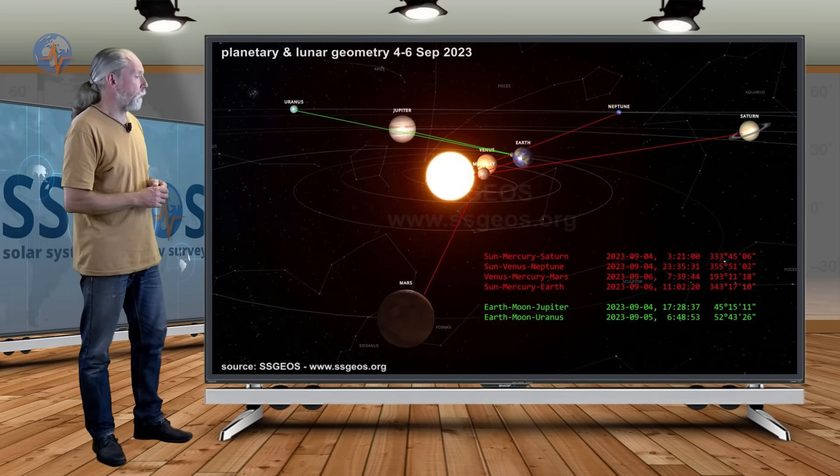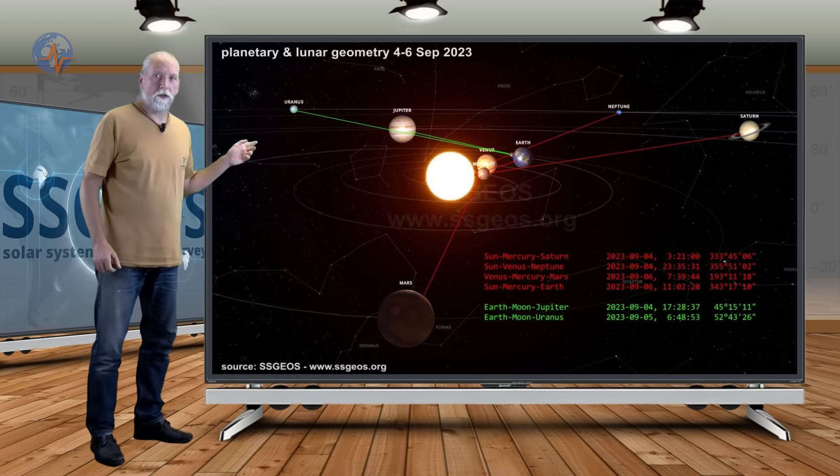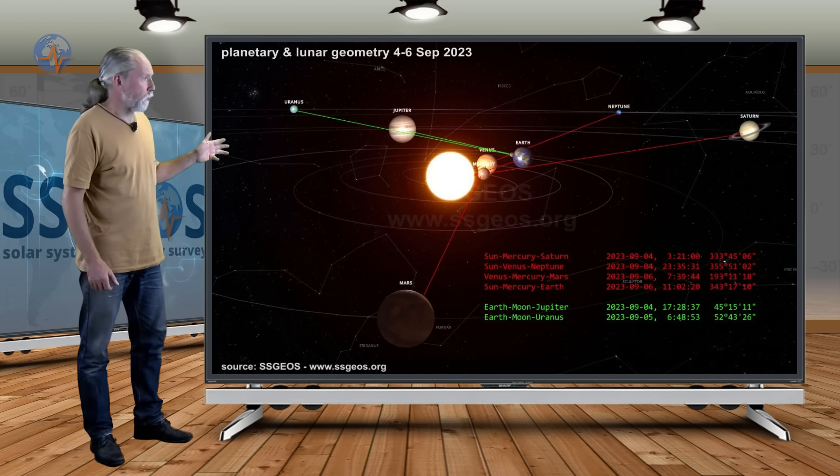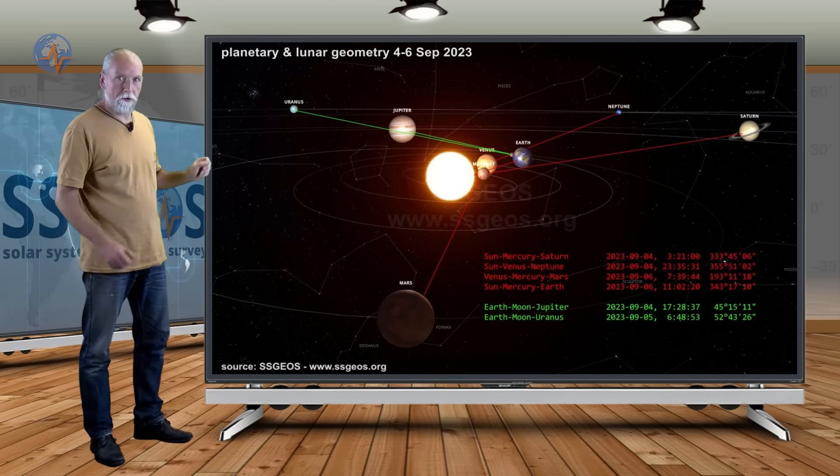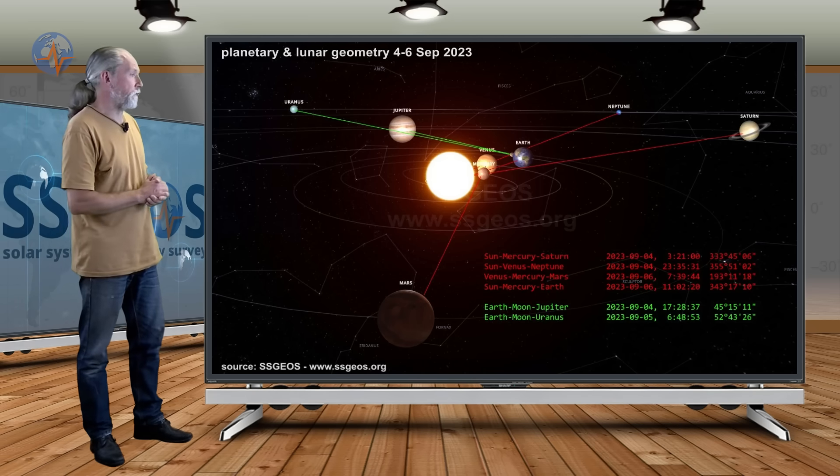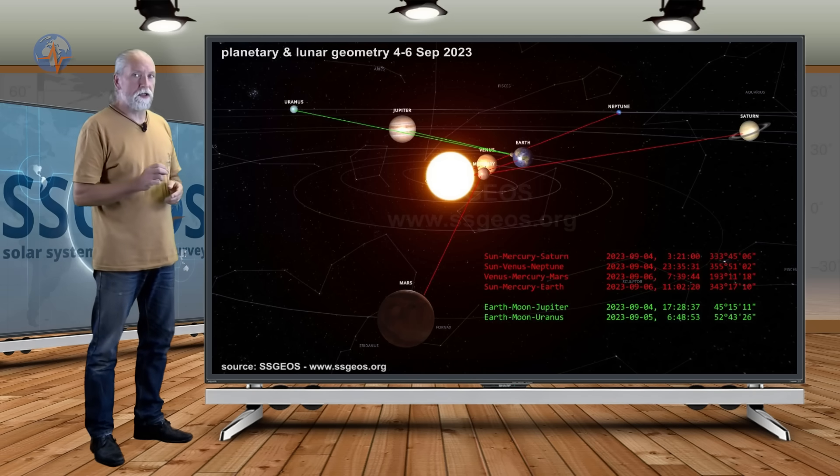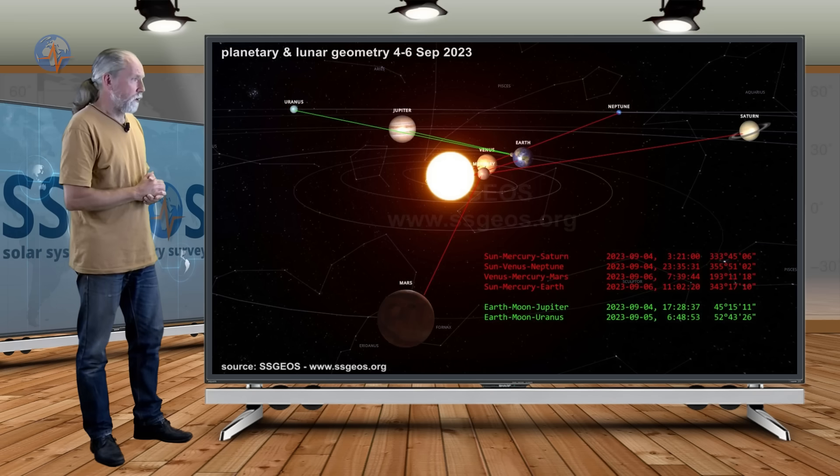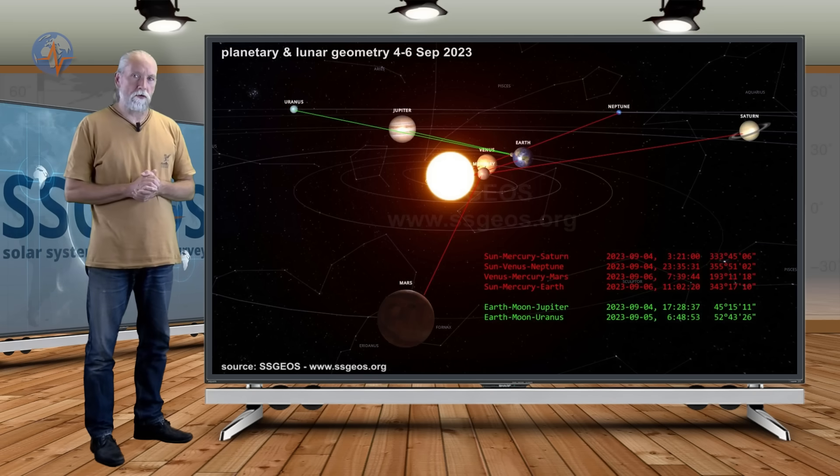If we look at the solar system, we see the planetary geometry with the red lines and also the lunar geometry with Jupiter and Uranus. This is from the 4th to the 6th. Again, that will be a critical time, and we really could see some big seismic activity as a result of that convergence of planetary and lunar geometry. It should not be underestimated.